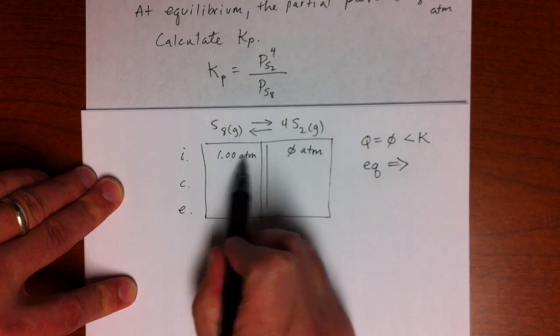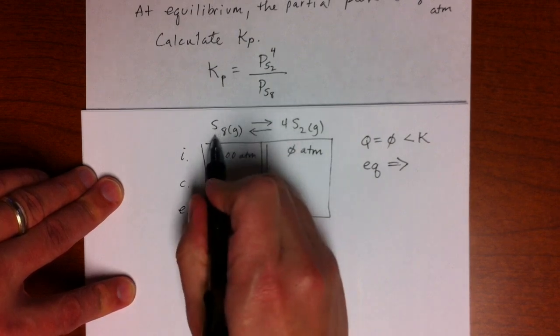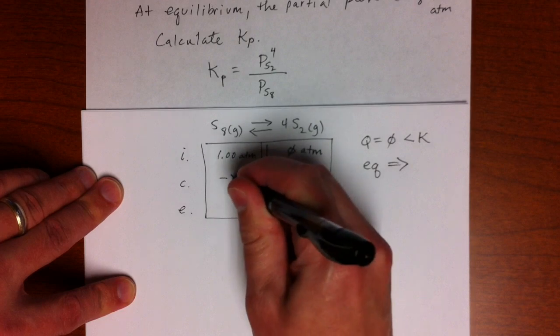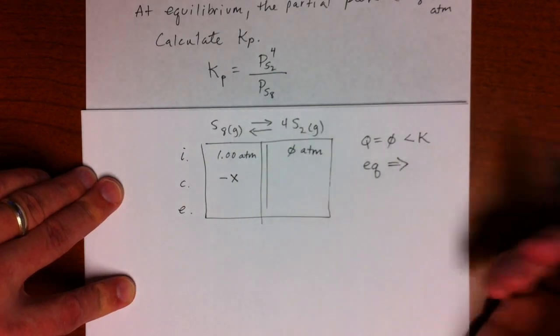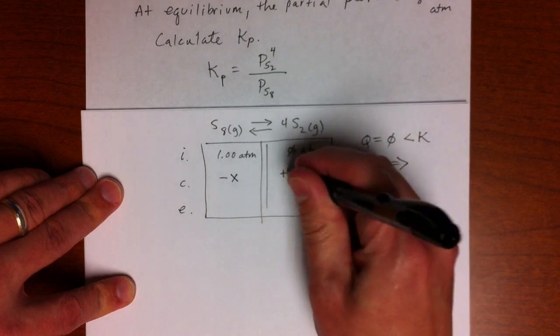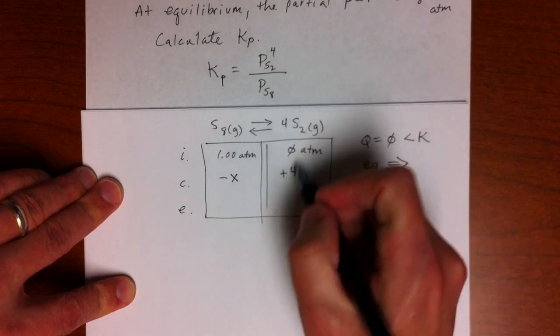So reactants must get smaller by the stoichiometric amount, so the change would be minus X. The products must increase by 4X because of the coefficient, right?